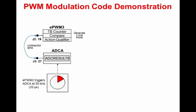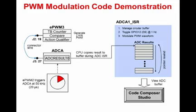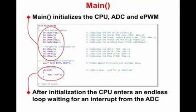The ADC will be triggered at a 50 kHz sampling rate using EPWM2. In the ADC interrupt service routine, a circular buffer will be managed. GPIO12, which is connected to LED D9, will be toggled at a 1 Hz rate and the PWM waveform will be modulated. The code will be running in real-time emulation mode and a Code Composer Studio graph window will display the waveform. In main, the CPU, ADC, and EPWM will be initialized.